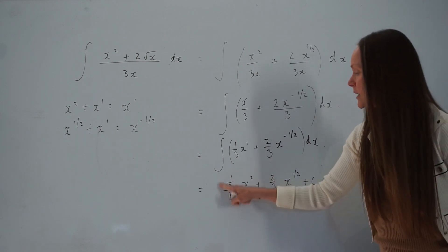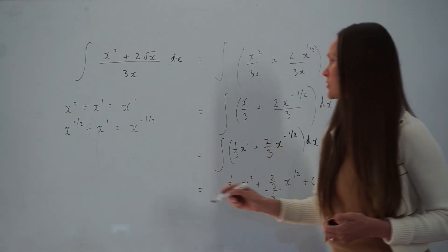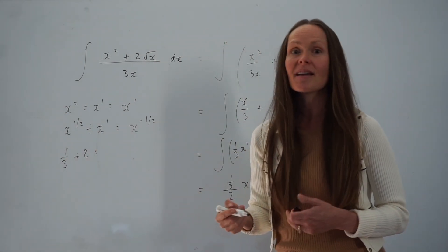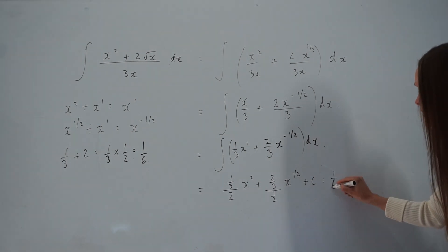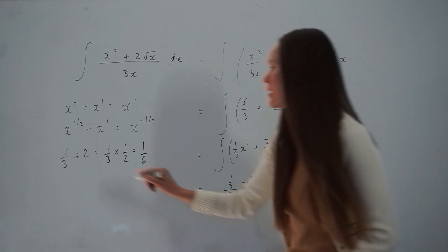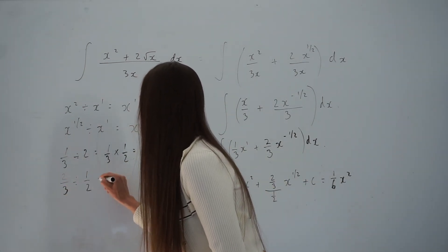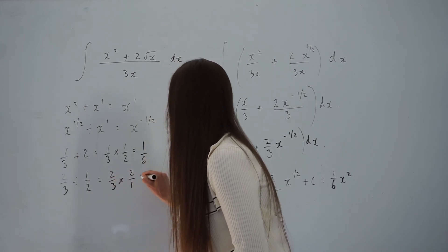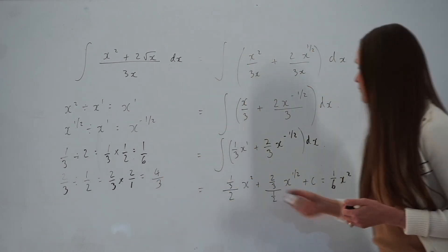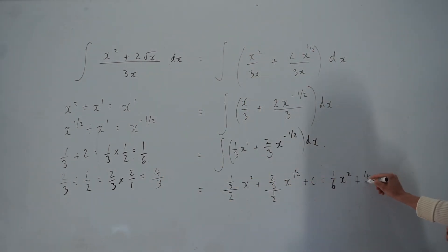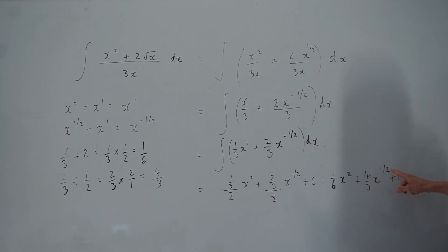Now simplify. One third divided by 2 is the same as one third multiplied by one half, which is one sixth. So for the first part we have one sixth x squared. For the second part, 2 thirds divided by one half is the same as multiplying 2 thirds by 2 over 1. Two times 2 is 4 and 3 times 1 is 3, giving 4 thirds. So the answer is one sixth x squared plus 4 thirds x to the power of one half plus c. As a final step, x to the power of one half can be written as the square root of x.